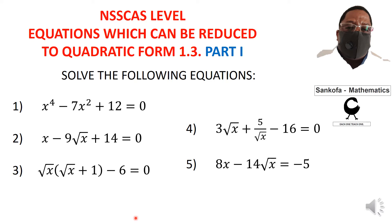The first 5 equations are: x to the power 4 minus 7x squared plus 12 equals 0; x minus 9 square root of x plus 14 equals 0. For all equations that have square roots, you need to be very careful and always check your solutions to see if they equal whatever is on the other side. You can pause the video and have a go to find these hidden quadratics.